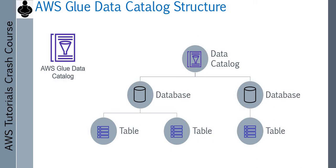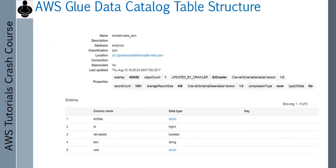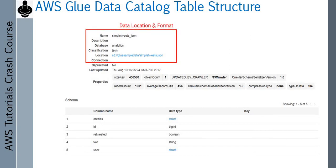So how does this table structure look like? The database is nothing but a collection of tables — the actual data-level information is in the table. The table stores information like what is the format of the data and what is the location. It will have a name — you can search or discover this data using that table name. For example, it says it's a JSON type of data and the data is stored in an S3 bucket, and that bucket location is also there. So you get location and format.